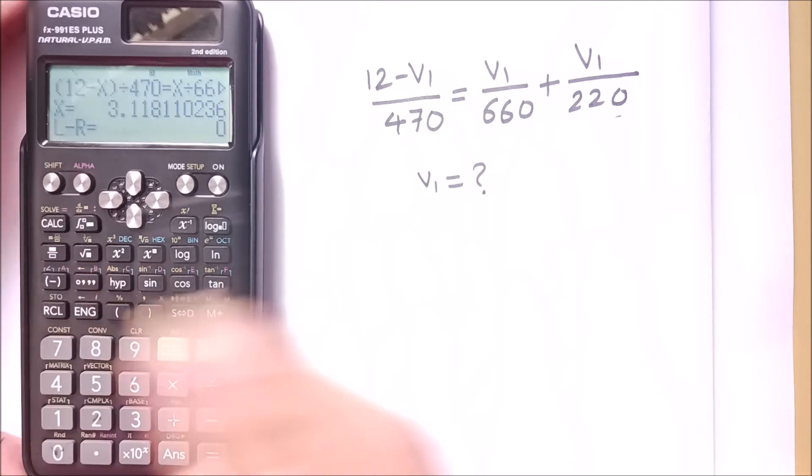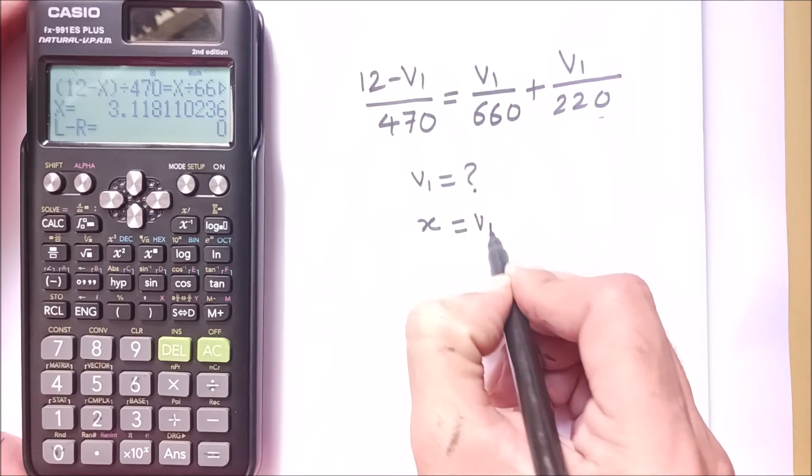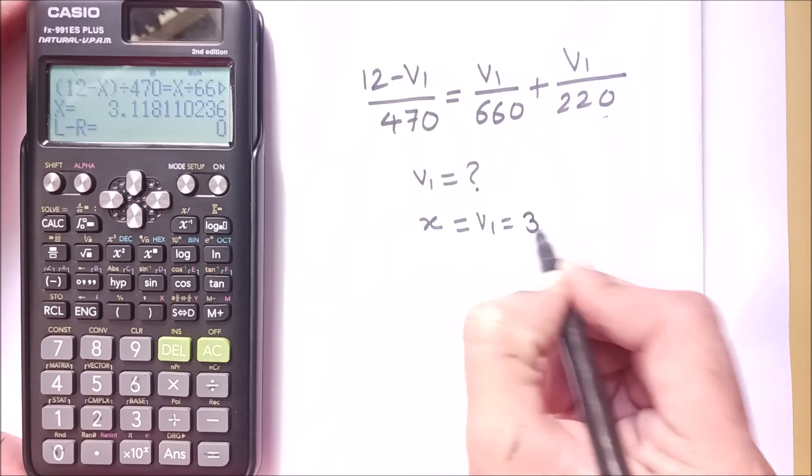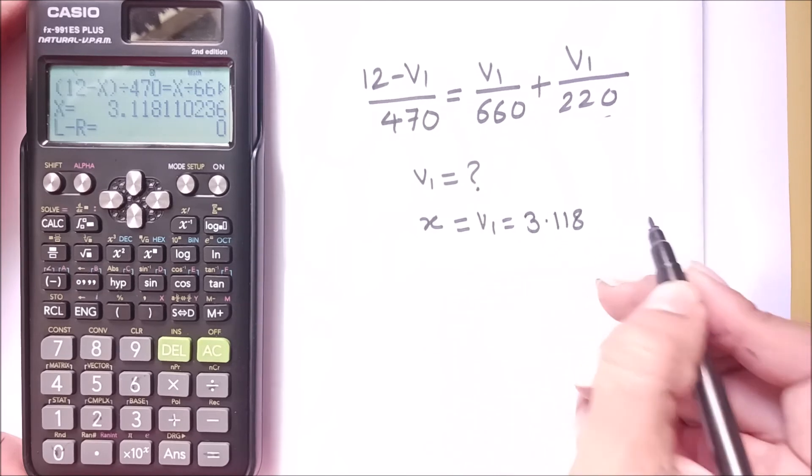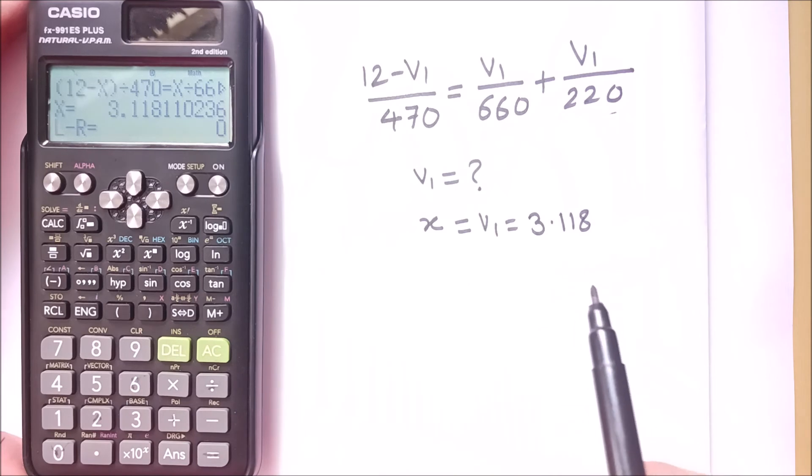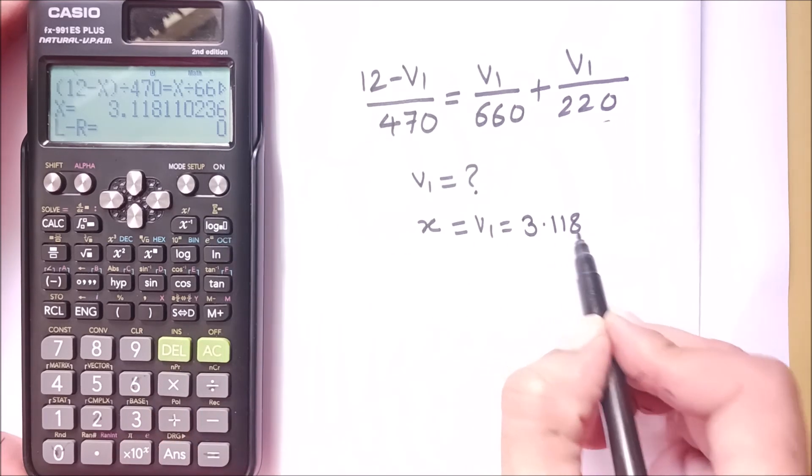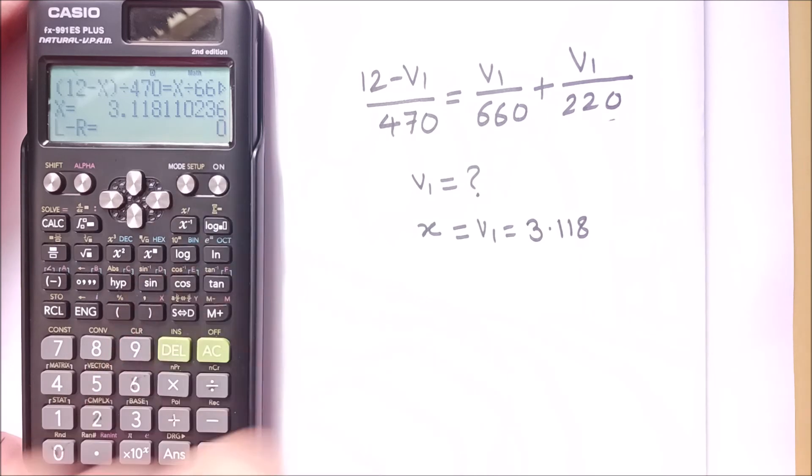In this way, it will give the value of X, which is the value of V1. In my case, it is showing 3.118 and so on. In the second line, it shows the error. Right now there is 0, which means no error. So the answer is 3.118110236.